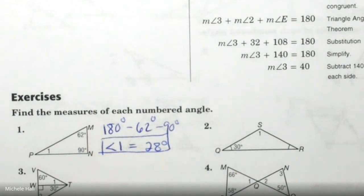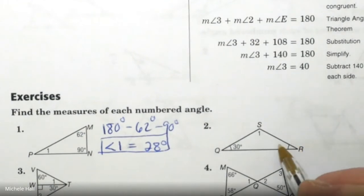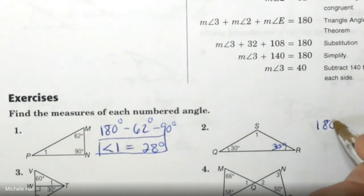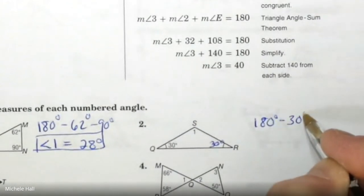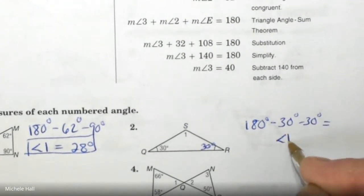Did you recognize in the picture that they're making markings at angle Q and angle R? They have the same markings, and that means these two angles are congruent. They mark sides and they mark angles. So I know that this is 30. The markings tell us that that's 30. So if the sum of the angles is 180, then I can subtract off 30 and subtract off 30. That's 160, so angle 1 equals 120.